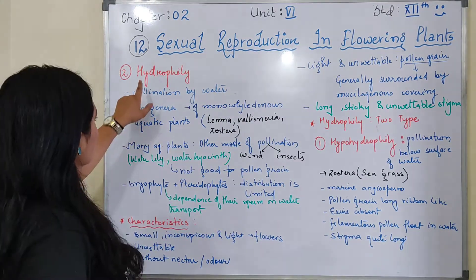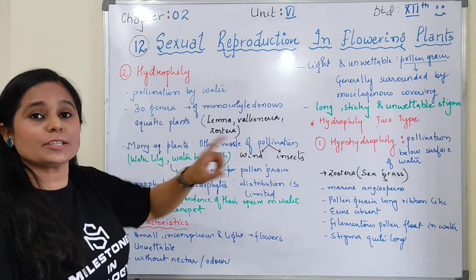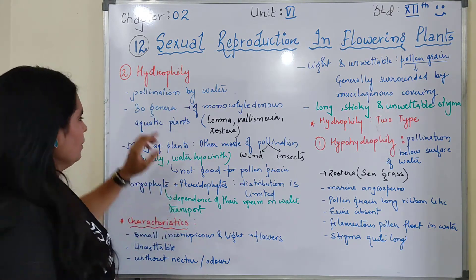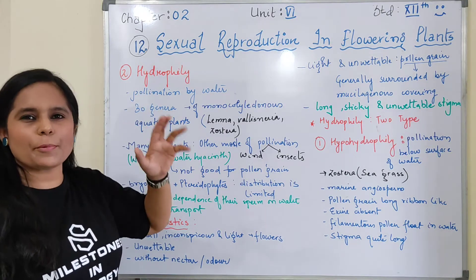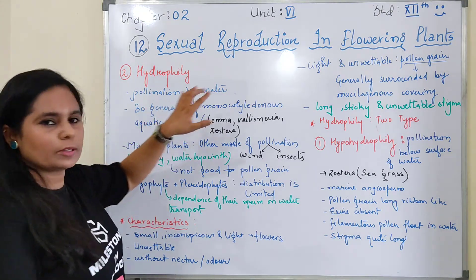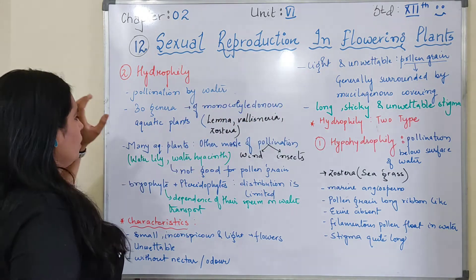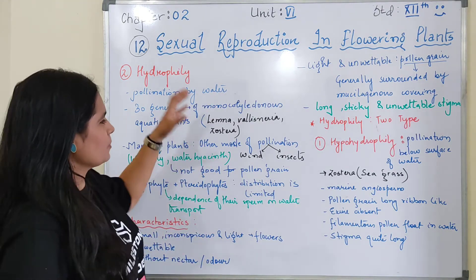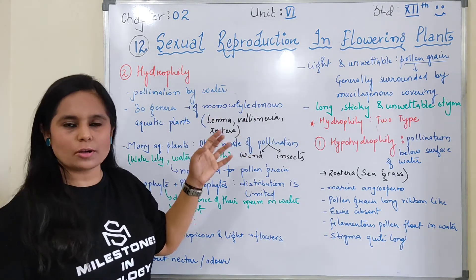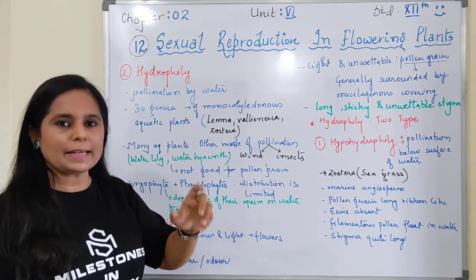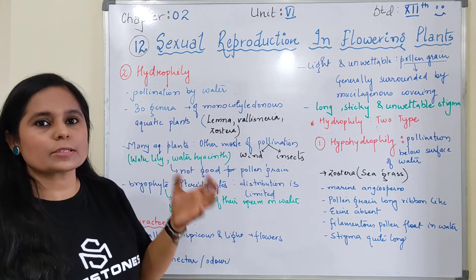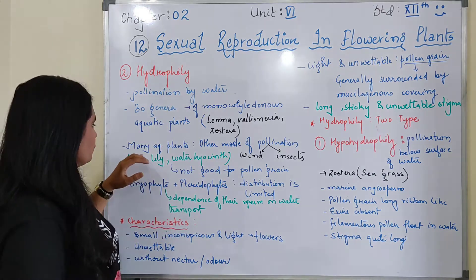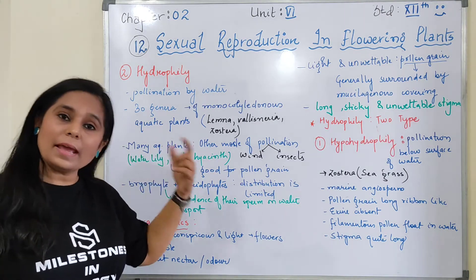Hydrophily is the term used when pollination happens through water. Approximately 30 genera of monocot plants are aquatic plants in which pollination happens through water. Examples include Lemna, Vallisneria, and Zostera. So in these 30 genera of monocot plants, pollination occurs through water.